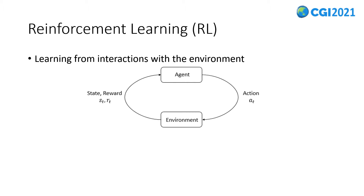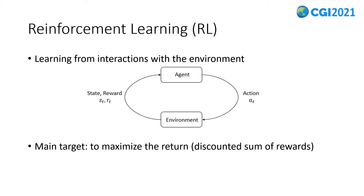Here, T is the time step, S is the state, R is the reward, and A is the action. Specifically, at state S(T-1), an agent takes an action A(T). Then the environment will change to a new state S(T), and the agent will receive a reward R(T) from the environment. The main target for the agent is to learn to take actions that will maximize the total reward it receives, or more precisely, the return, which is the discounted sum of rewards.